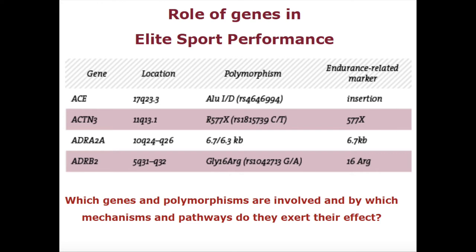Likewise, actin-3. The reason I am talking about the functional aspect of these genes is to understand what genes and polymorphisms are involved in sports performance, and you need to understand the mechanisms and pathways by which they impact on disease or other outcomes. Unless you know the mechanism and pathways, you will not be able to develop personalized nutrition. Actin-3 is a skeletal muscle protein widely expressed in fast-twitch muscle fibers required for rapid and fast muscle contractions for sprint activities. And finally, ADR — the adrenergic receptors — which mediate the physiological effects of adrenaline and noradrenaline, and also mediate adipose tissue lysis, an important step in meeting energy demands during endurance sports training.